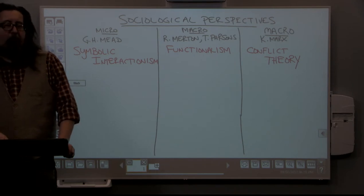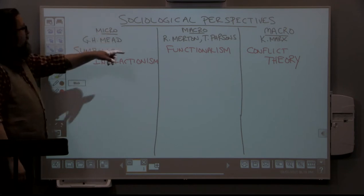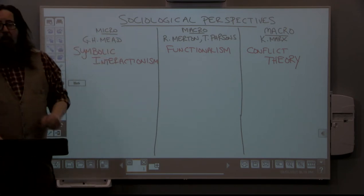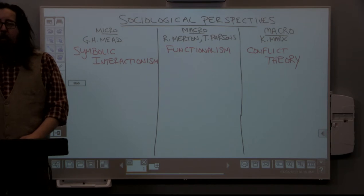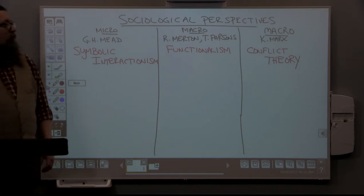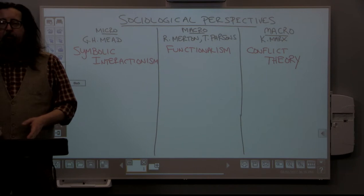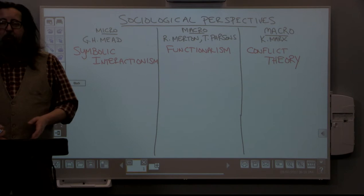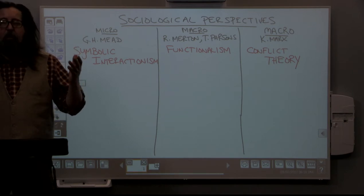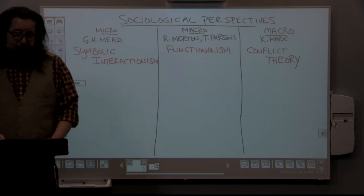The first perspective we'll discuss is symbolic interactionism. I've also written the words micro and macro here. The idea behind micro and macro sociology is the focus of those particular perspectives. When looking at things from a micro standpoint, we're looking at the smallest elements of society — individuals and their behaviors and interactions. Micro sociology focuses on the very small elements of society, while macro sociology moves up to focus on large organizations and large elements of society.